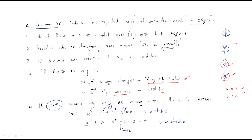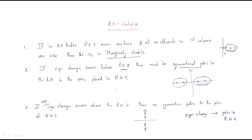The characteristic equation must be in proper order — that means powers 4, 3, 2, 1, 0 all present and with positive coefficients. Otherwise the system becomes unstable. These are very important points when dealing with the RH criteria.